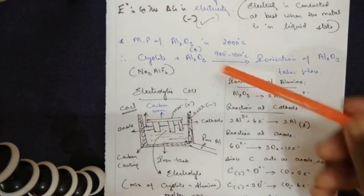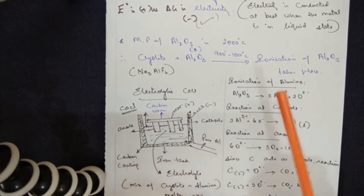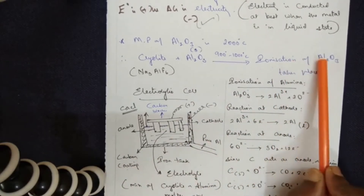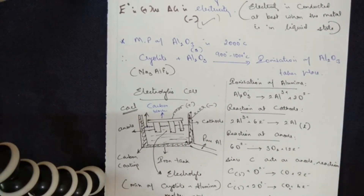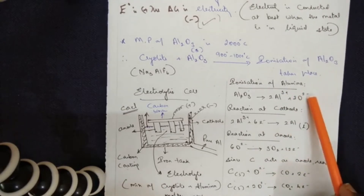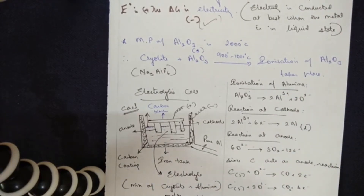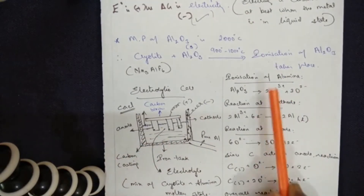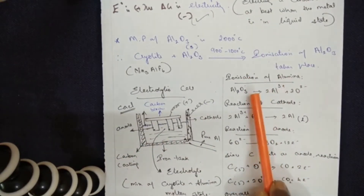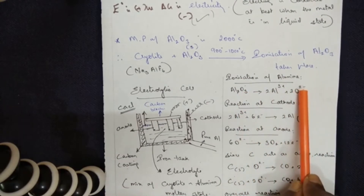After the setup is complete, current is passed and the reactions take place. Ionization of alumina occurs, splitting the molecule into positive ions (Al³⁺) and negative ions (O²⁻). Redox reactions involving these charges are very important to the process.